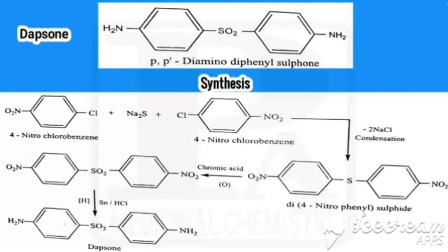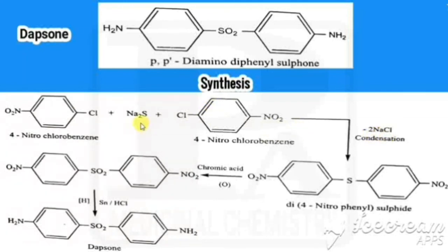For the synthesis of dapsone, the starting material is 4-nitrochlorobenzene. Two molecules are taken and disodium sulfide (Na2S) is added. The two sodium atoms combine with the two chlorines and are removed as NaCl, and the sulfur occupies the center position. On oxidation with chromic acid, the sulfur is oxidized to give the sulfone. Finally, reduction of the two nitro groups gives amino groups, yielding dapsone.